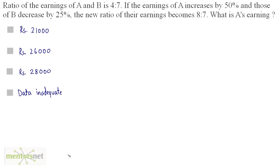Ratio of the earnings of A and B is 4 is to 7. If the earnings of A increases by 50% and those of B decrease by 25%, the new ratio of their earnings becomes 8 is to 7. What is A's earning?